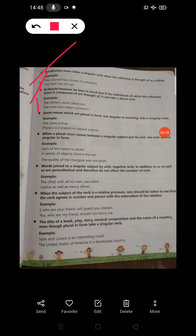Some nouns which are plural in the form but singular in meaning take a singular verb. For example, the news is true. Even though news has an 's' at the end, it refers to information or north-east-west-south news. Physics is a subject, a branch of natural science, so it takes a singular verb.